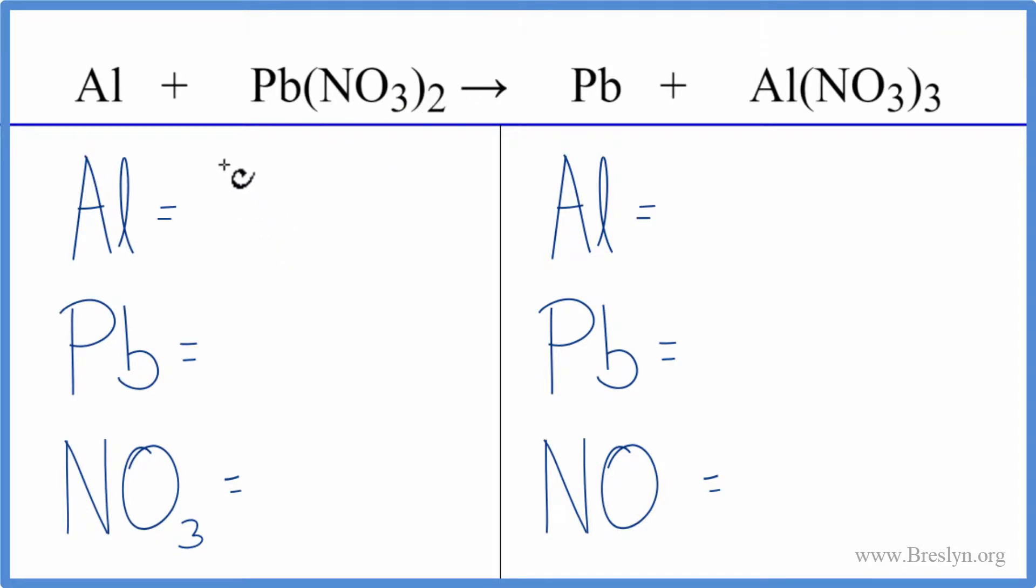We're going to use a little bit of a trick to make it easier. So we have one aluminum, one lead, and then this nitrate, this NO3, is a polyatomic ion, and it stays together in the chemical reaction. We have it here, and here it is again. So we're going to count this as one thing. I have one nitrate times two. That gives me two nitrates.